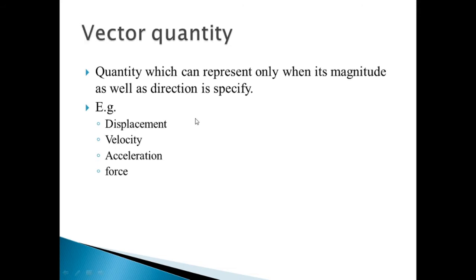Opposite to scalar quantities, vector quantities are quantities which can be represented only when there is both a magnitude and a direction. If we have to represent a vector quantity, we require magnitude as well as direction. For example, displacement. If we have to express displacement, I have to say I displaced 1 meter in a right direction. So we can identify the actual displacement.